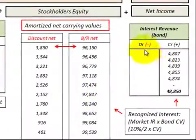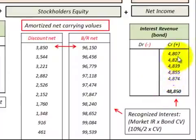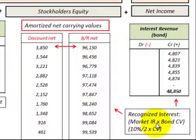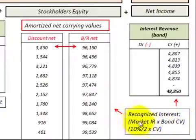The interest revenue that we recognize on our income statement is based on the market rate of interest — in this case 10% per year, or 5% per period. You take that 5% market rate per period times the bond's carrying value for whatever period you are in, and that gives you the interest revenue to recognize.